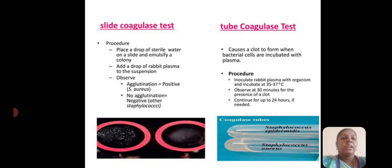The tube coagulase test causes clot formation when bacterial cells are incubated with plasma. Procedure: incubate rabbit plasma with the organism at 35 to 37 degrees Celsius. Observe at 30 minutes for the presence of a clot; continue observation for up to 24 hours if needed.